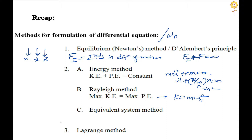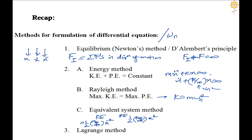In the equivalent system method, we say a system is composed of the simplest configuration — only one spring and one mass for a translational system, or only one torsional spring and one rotor for an angular coordinate system. We find the KE and PE of the real system and write them in the forms: one-half times something times x-dot squared, or one-half times something times x squared for PE. The 'something' in brackets is compared with the equivalent system to identify m_equivalent and k_equivalent, giving omega_n as the square root of k_eq over m_eq.